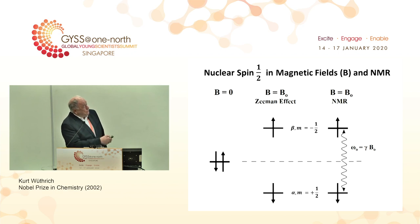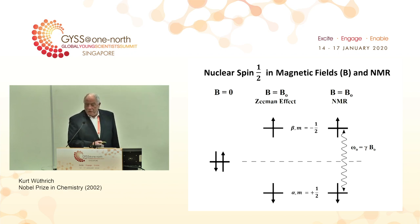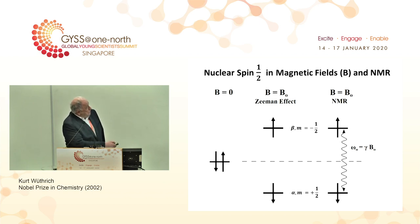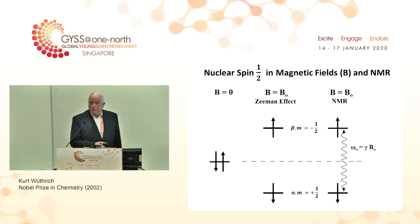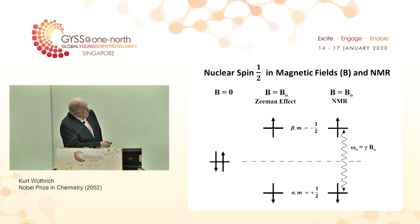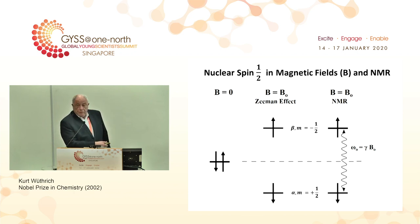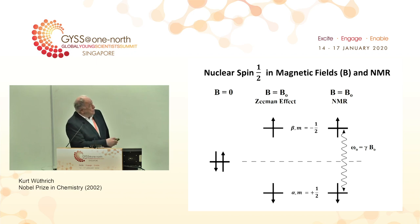Zeeman had no idea that there would ever be nuclear magnetic resonance. He was just curious and discovered these energy splittings in the fine structure of optical spectra of well-chosen chemicals. The energy gap between what is now called the Zeeman levels — Zeeman got the second physics Nobel Prize for this discovery in 1902.